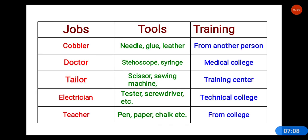I hope you have done it. Here are the answers. For cobbler, the tools needed are needle, glue, and leather. Cobbler gets training from another person — there is no particular school to train them, so it is a skill learned from another person. For doctor, tools include stethoscope and syringe. Doctor gets training in medical college.